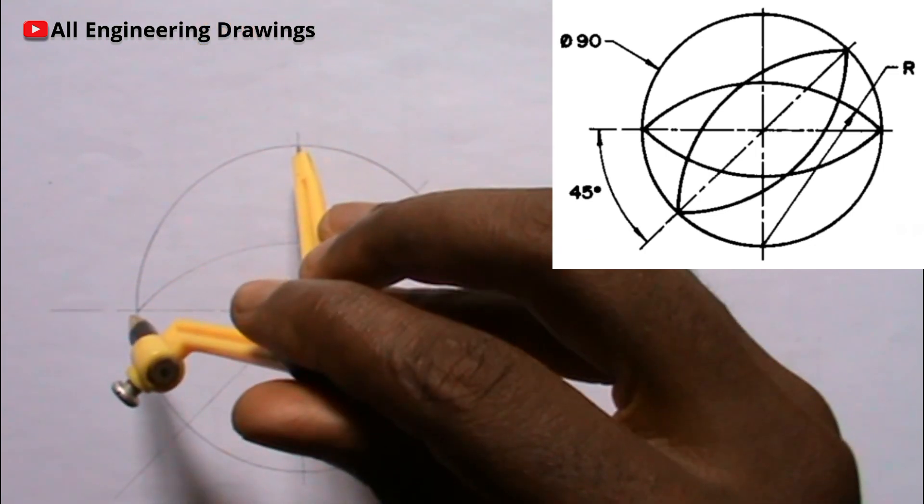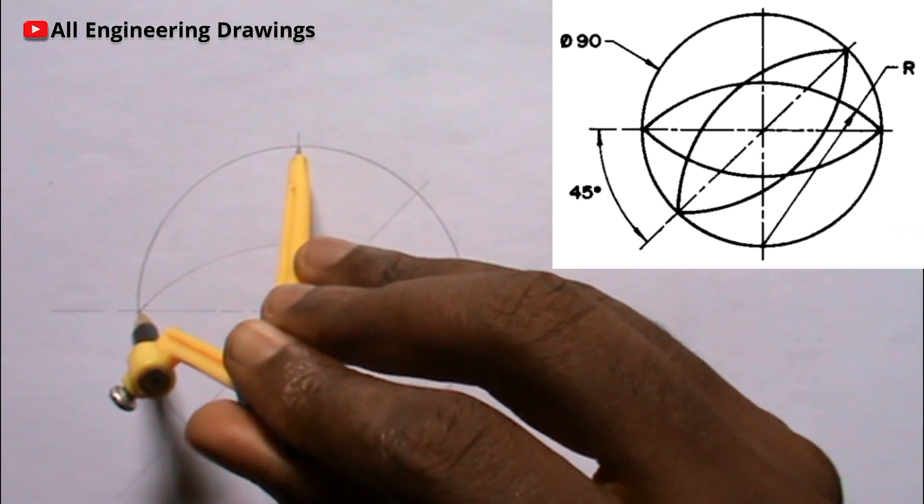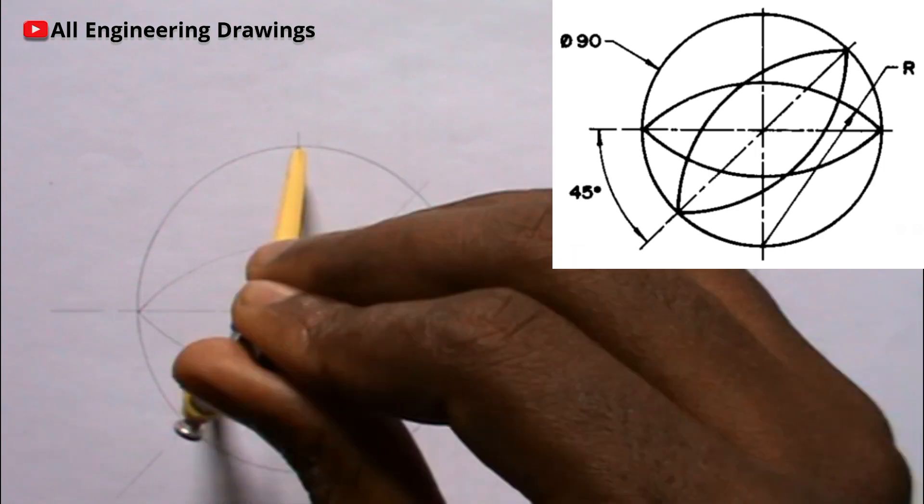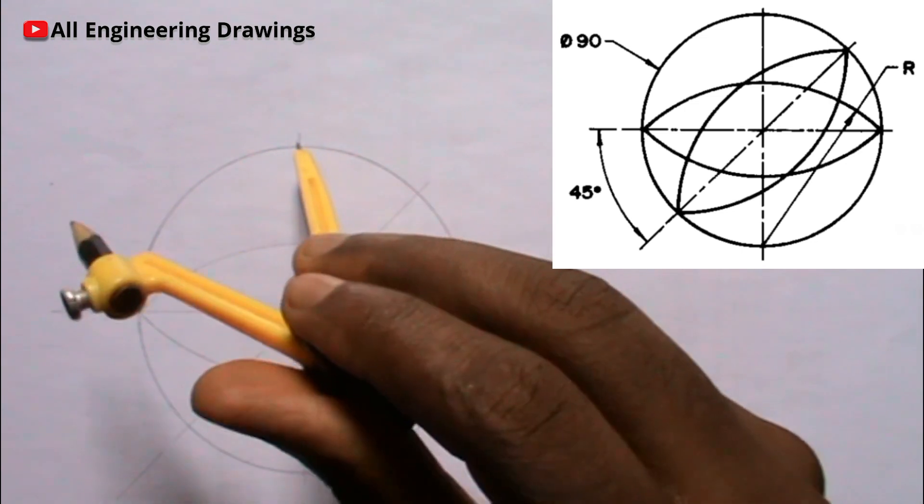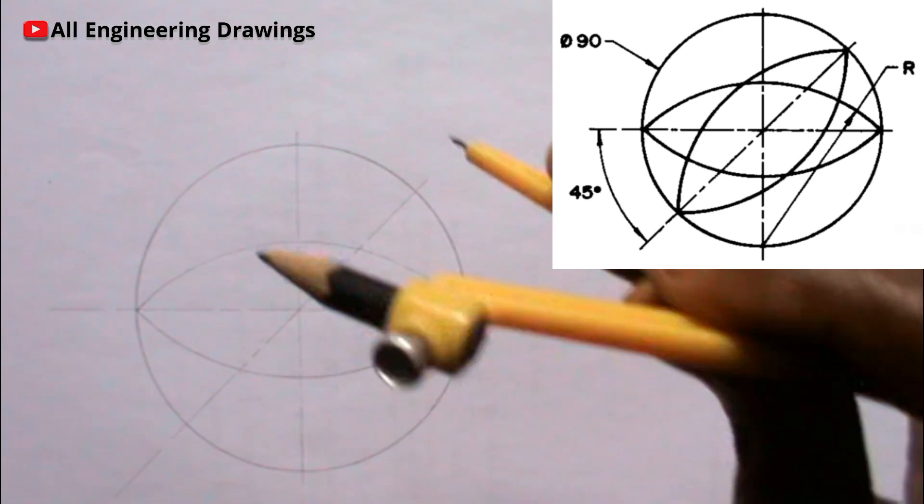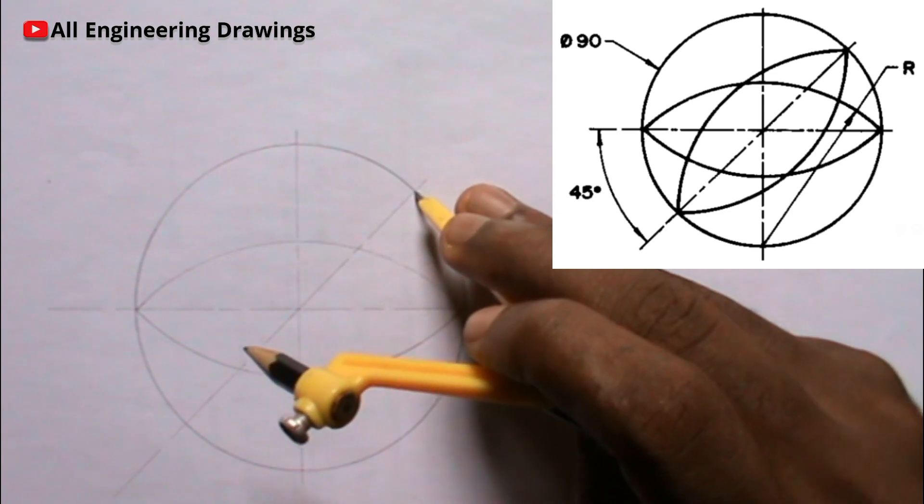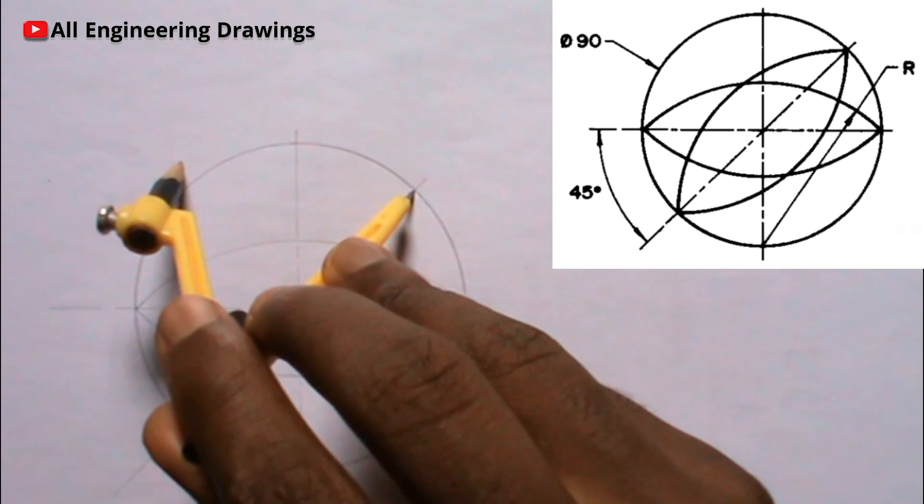With the same radius you used, draw the second arc. With the same radius, place your compass on this point, then cut an arc on the circumference of the circle this way.